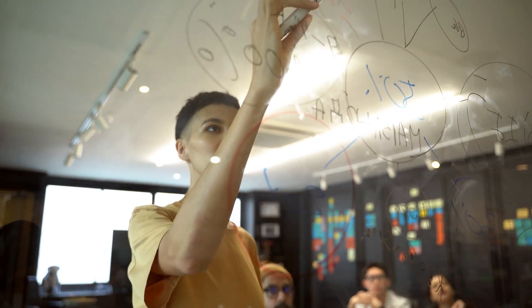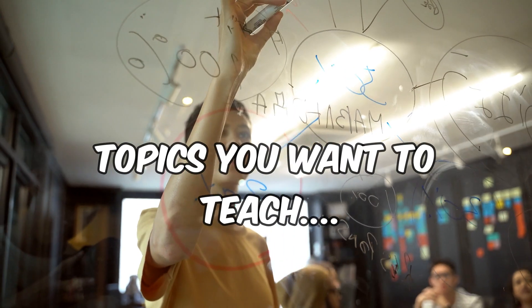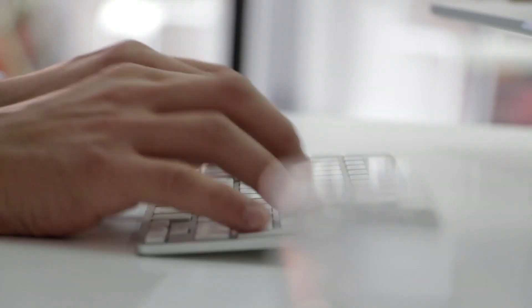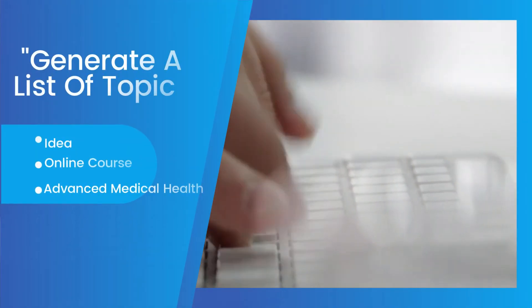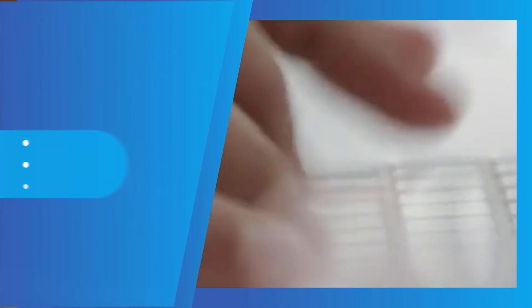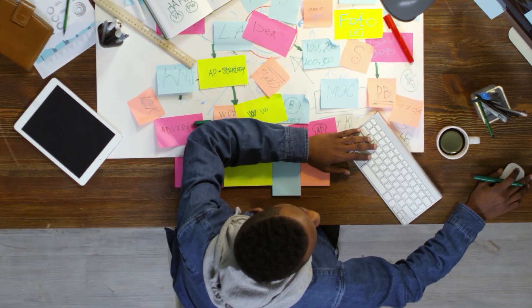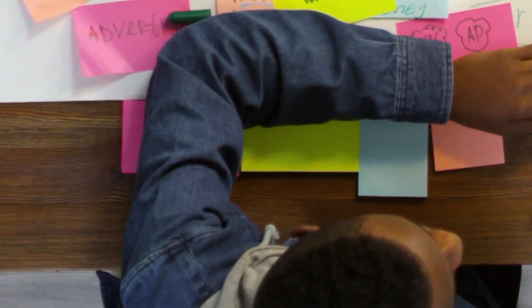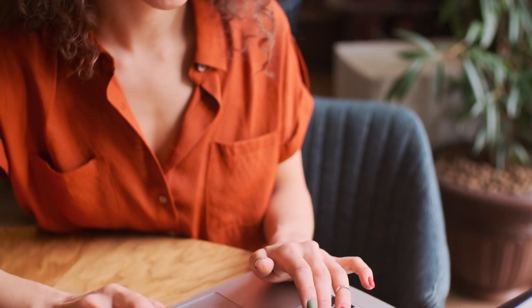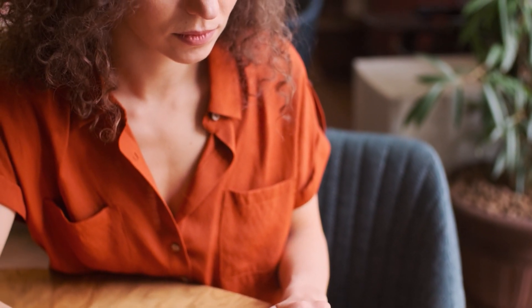Let's get started with your online course creation. First, you need to know and be sure of the course topics you want to teach. You're probably thinking that's a lot of mental work — however, ChatGPT can help you do all of this. All you need to do is enter a prompt such as: 'Generate a list of topic ideas for a new online course about advanced medical health.' You'll be provided with different topic ideas. This all depends on your area of specialization — you can further input an instruction to get very interesting titles suitable for your target audience.